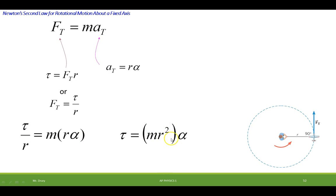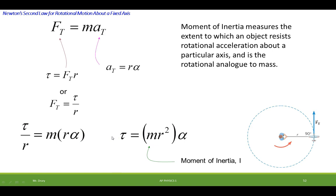It's called the moment of inertia. And it has letter I. The moment of inertia measures the extent to which an object resists rotational acceleration about a particular axis. And it's really the rotational analogous to mass.